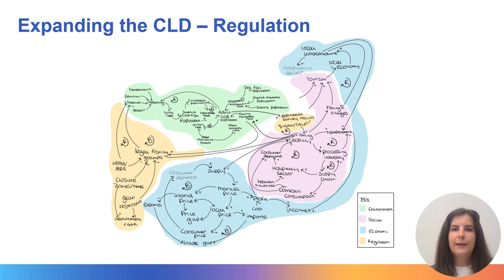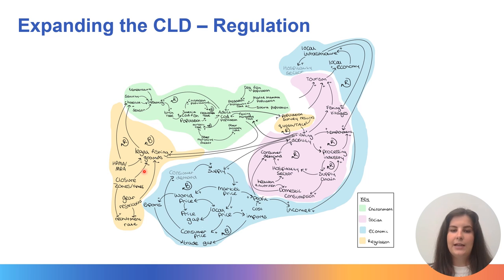In this part we've expanded the system to include regulation, which often acts on the social, economic and environmental parts of the sustainability of a fishery. Here we can see HPMAs and MPAs — highly protected marine areas and marine protected areas — which decrease the amount of legal fishing grounds, influencing fishing activity. There are also closure zones which influence legal fishing activity, as well as quota and total allowable catch, which also influence fishing activity.